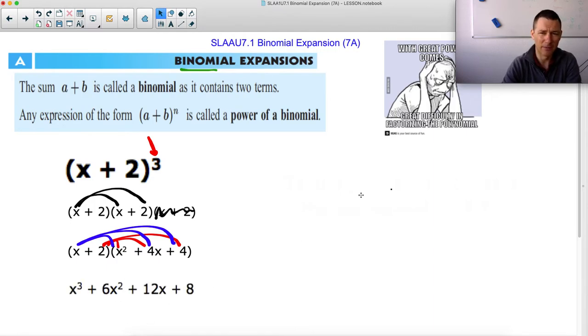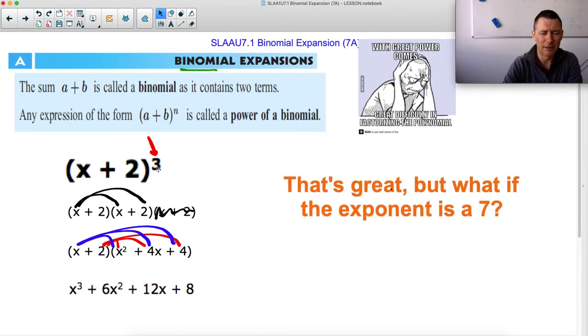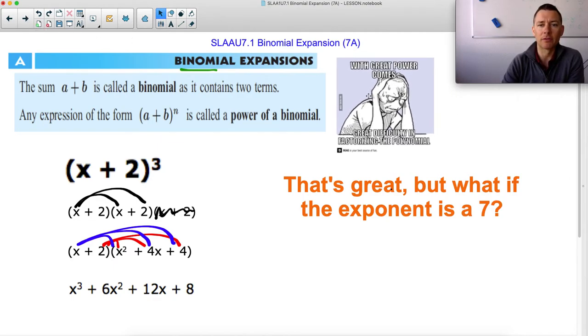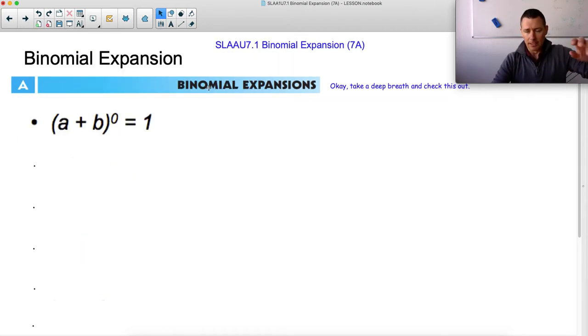And then later do the same thing and distribute the x in and then simplify. Ugh. Turn into that. Fine. We can do that. But what happens like if it's not a three? What if it's like a seven? This would become awful. And so wouldn't it be nice if we could simplify this process and so we could have more time to play candy crush or do something useful with our lives. And in fact there is and that's the theory about binomial expansion. So that's what I want to show you. So take a deep breath. Stretch it out. And then check it out with me.